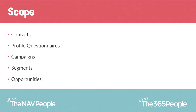We'll talk about segments, which is basically a way of creating a list of contacts based on certain criteria — for example, all contacts that have ordered a certain product, or based on answers they've given in profile questionnaires. Then we'll move on to opportunities and how NAV handles the sales cycle: what stage you're at with a prospect, whether you've done a demo, quoted for them, and once they've accepted, moving on to creating sales orders and invoices.